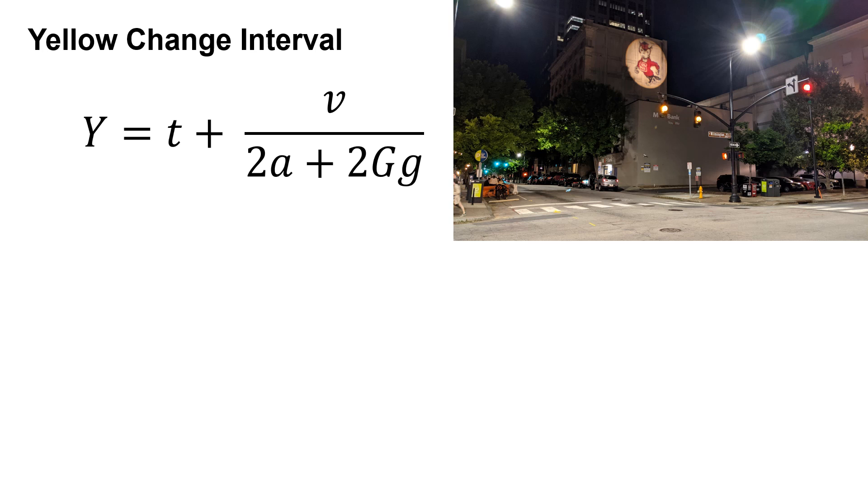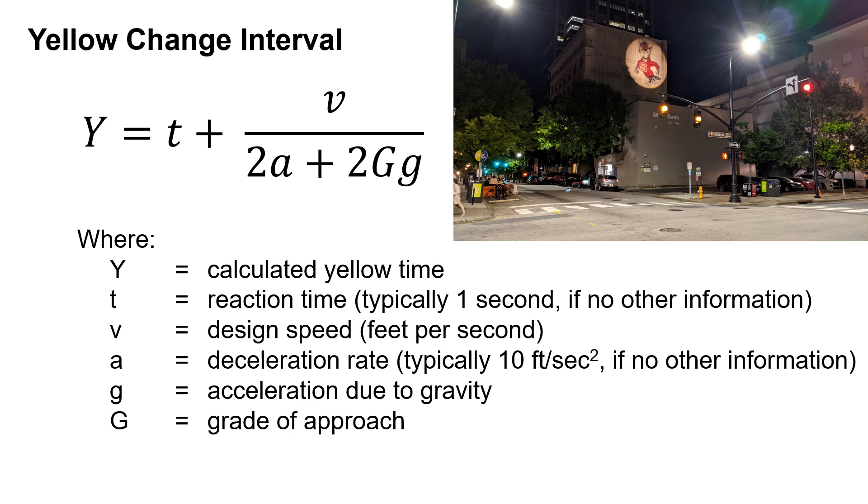To calculate the yellow change interval, we use this equation solving for the calculated yellow time. We start with our reaction time, which is typically one second unless you have other information. Then we add the design speed in feet per second divided by two times the deceleration rate.